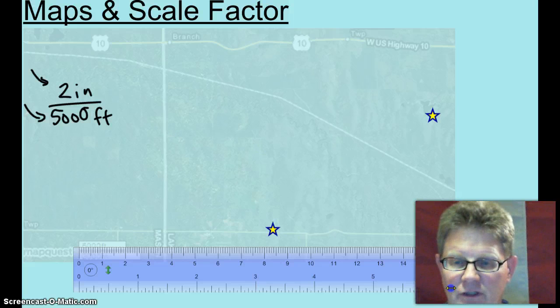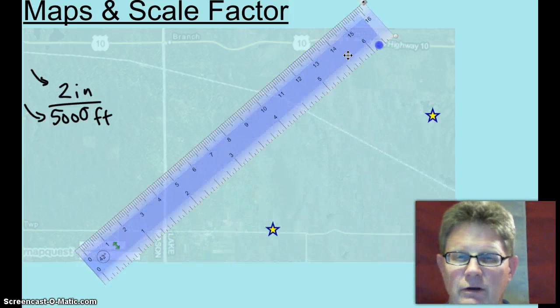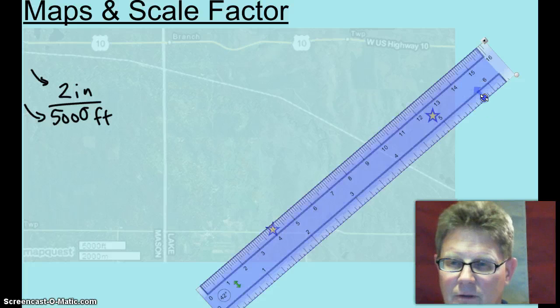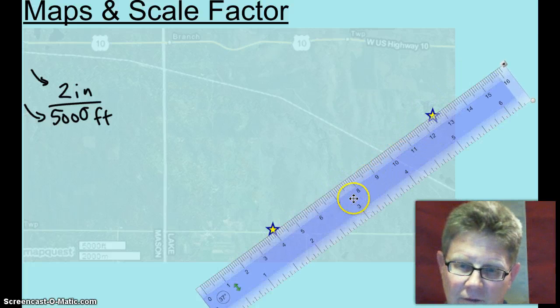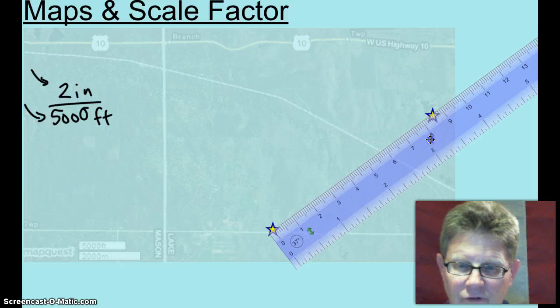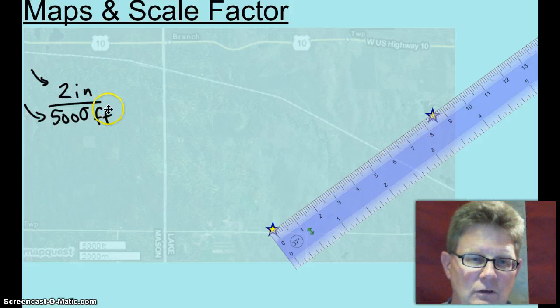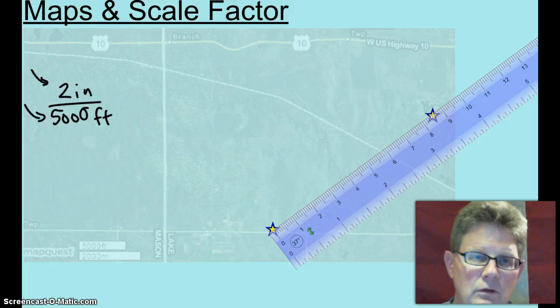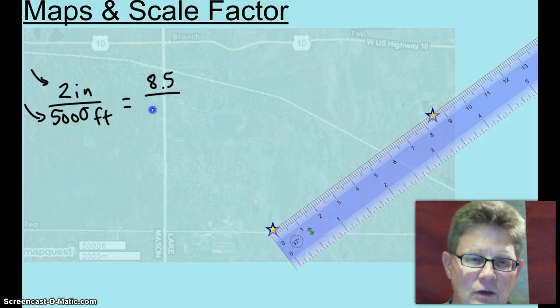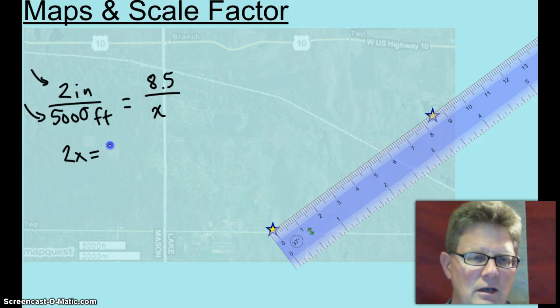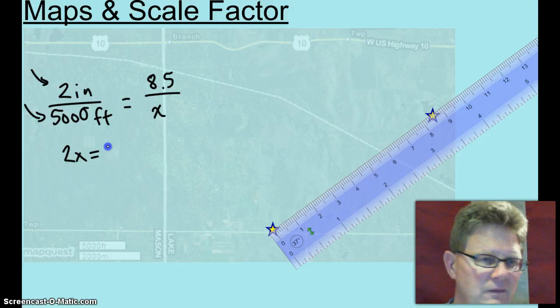Now we're going to actually measure and see how far apart those are in inches on this map. From zero, it looks like it's eight and a half. So that's eight and a half inches. So we are going to put equals 8.5 over x. How many feet is that? So you're going to cross multiply. Two x equals, can I do this in my head? I think I can.